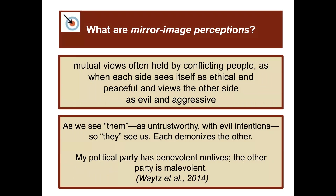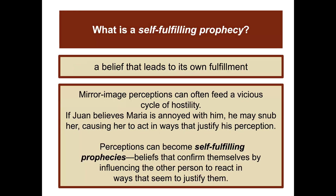Mirror image perceptions are mutual views often held by conflicting people, as when each side sees itself as ethical and peaceful and views the other side as evil and aggressive. As we see them as untrustworthy with evil intentions, so they see us — each demonizes the other. This happens all the time in politics. A self-fulfilling prophecy is a belief that leads to its own fulfillment. Mirror image perceptions can feed a vicious cycle of hostility: if one believes Maria is annoyed with him, he may snub her, causing her to act in ways that justify his perception.